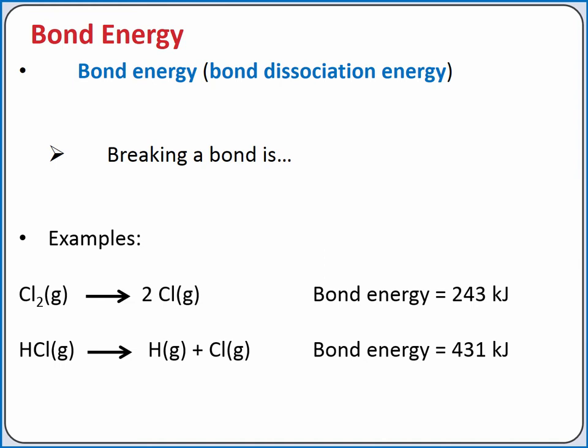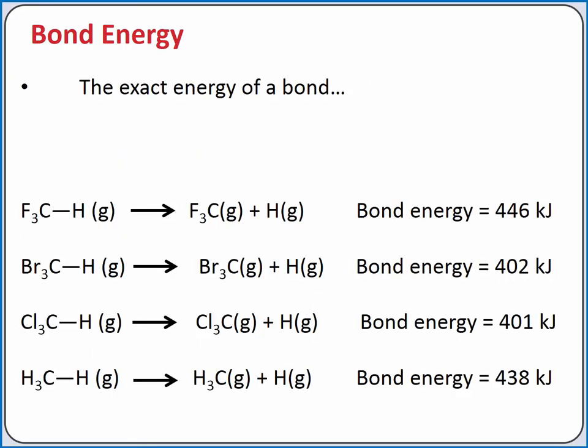Or, to break a single bond between hydrogen and chlorine, it requires 431 kJ per mole. The exact energy of a bond depends not just on the two atoms involved in the bond,